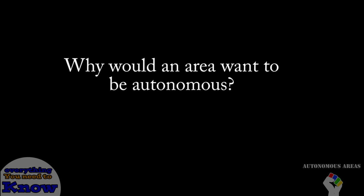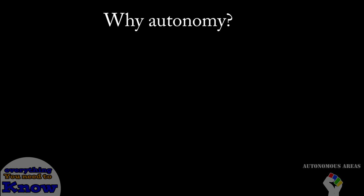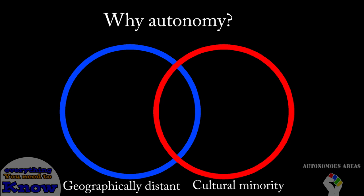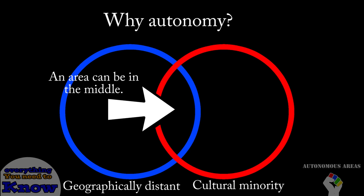Let's start with the reasons an area would want autonomy from their sovereign country. Pretty much every autonomous region in the world can be divided into two categories: either they are geographically distant from their sovereign state, or they are a cultural, ethnic, or religious minority inside said country. Now these two clauses can be interchanged, so they can both apply to the same state — they're not distinct.